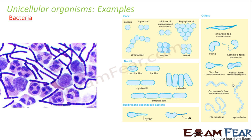Bacteria can live in the body of plants or animals — for example, bacterial infection in your teeth means bacteria is living there. Under the microscope, bacteria can be seen in many different shapes: spherical, elongated, oval-like structures, or small structures with a tail. There are many different shapes and structures of bacteria as shown in the microscopic view.